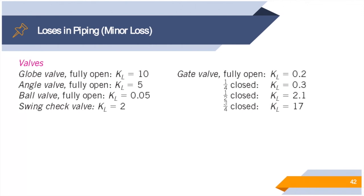For different types of valves, the globe valve has the highest loss coefficient when fully open, followed by angle valve, swing valve, and ball valve. Gate valves have a very low KL when fully open, but closing them halfway increases KL tenfold, and closing three-quarters increases it roughly 100 times compared to fully open. These are important considerations when designing piping systems.